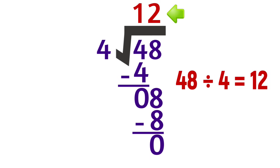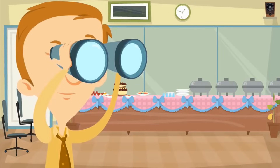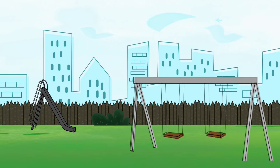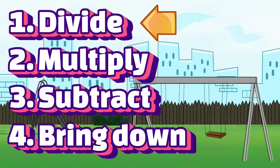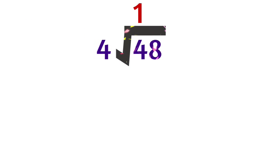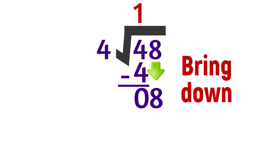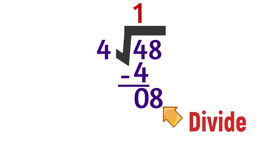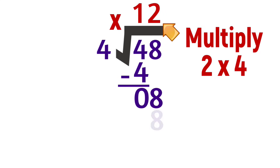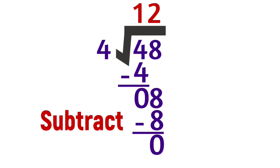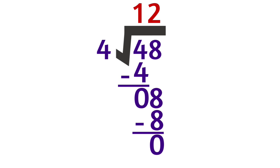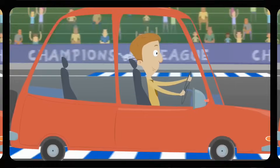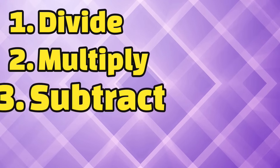That might seem like a lot of steps to remember, but there's a trick. To do long division, all we have to do is divide, multiply, subtract, bring down. First, divide: four goes into four one time. Second, multiply: one times four equals four. Third, subtract: four minus four equals zero. Fourth, bring down: bring down the eight. Then we repeat — divide: four goes into eight two times. Multiply: two times four equals eight. Subtract: eight minus eight equals zero. And there's nothing else to bring down. The quotient — the answer — is 12. The four steps in long division are divide, multiply, subtract, bring down.